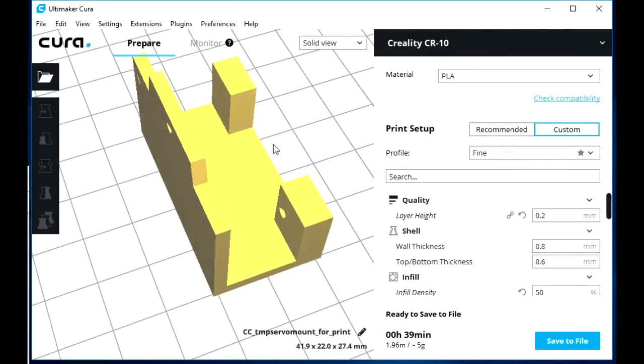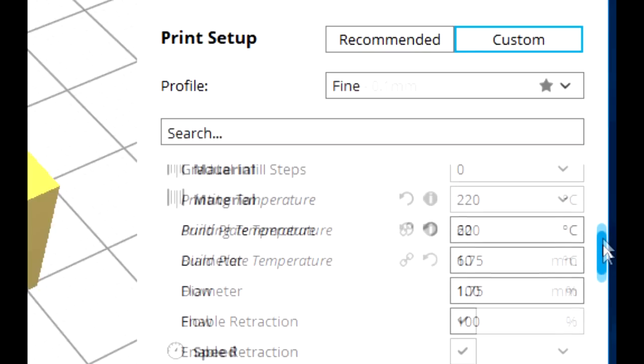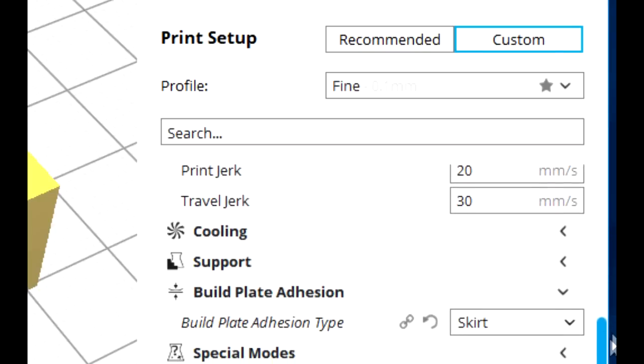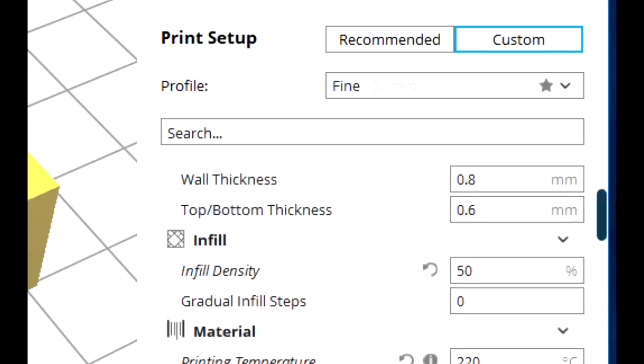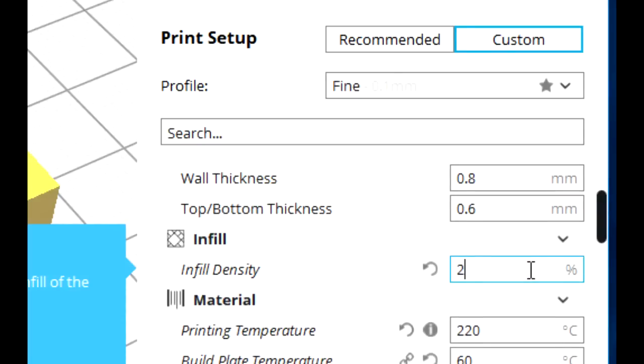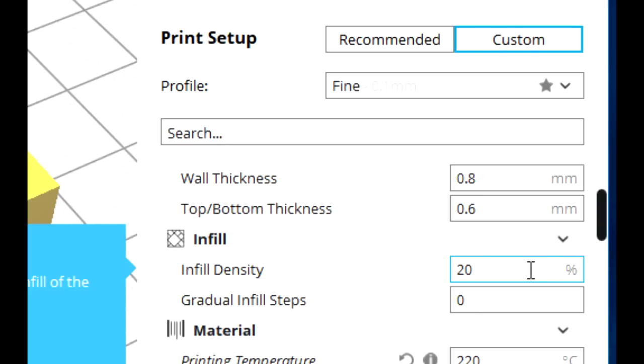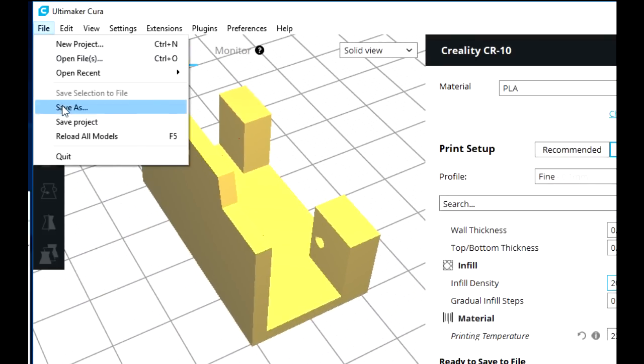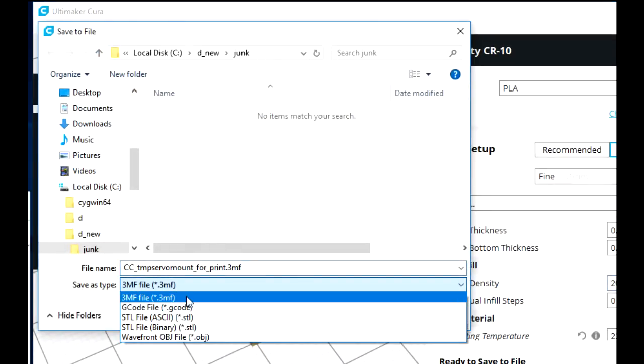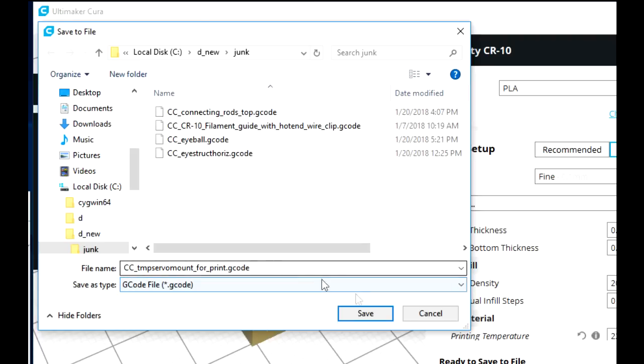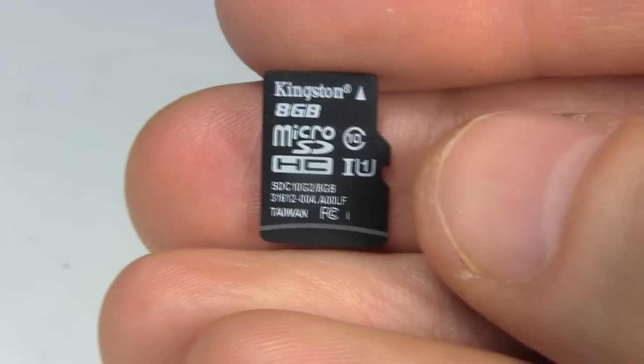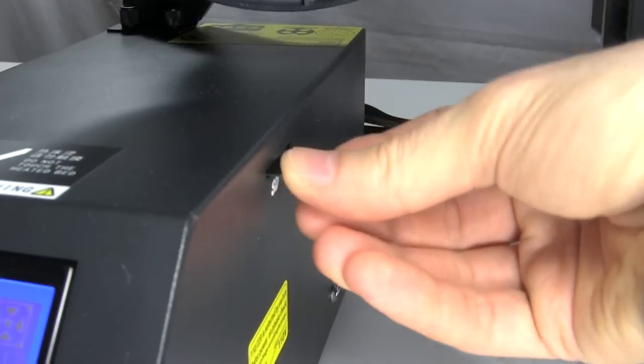The slicer program takes your file and converts it to something the printer can use, as well as does a bunch of other things specific to your printer and print job. For the CR10, we usually use Cura. For example, here I tell it I want only 20% infill, meaning that the object doesn't have to be very strong, and so it should be filled inside with only 20% of plastic. The result of that is a G-code file, which goes on a micro SD card to give it to the CR10 printer.